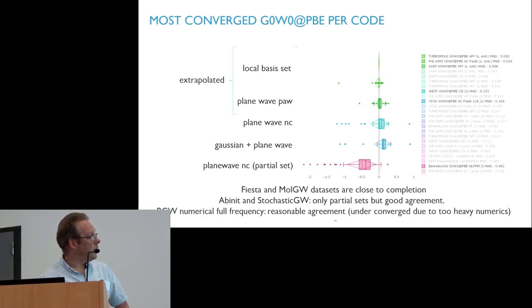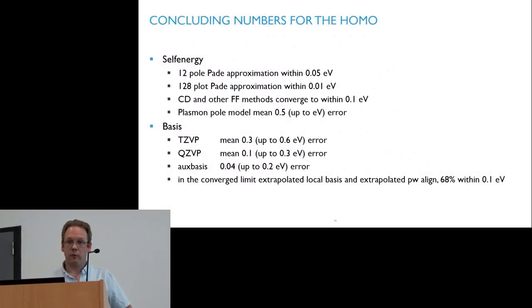ABINIT and stochastic GW are not included because we only have a partial data set for them up until now. BerkeleyGW with numerical full-frequency actually agrees a lot better, but because of that brute force real-space, real-axis numerical integration, they could only do the very tiny molecules of this entire set. Here's another slide summarizing some of the numbers.